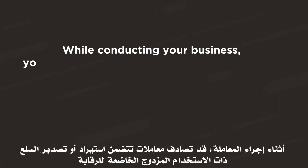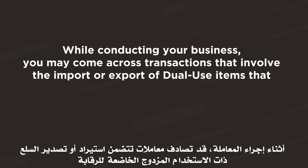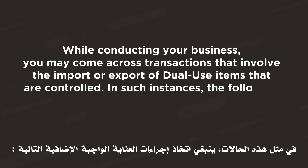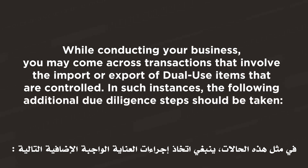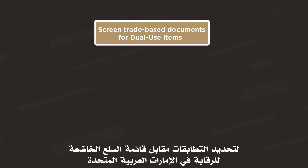While conducting your business, you may come across transactions that involve the import or export of dual-use items that are controlled. In such instances, the following additional due diligence steps should be taken. Step 1: You should screen trade-based documents such as bills of lading, invoices, and sales and purchase agreements for alerts against the UAE Control List.